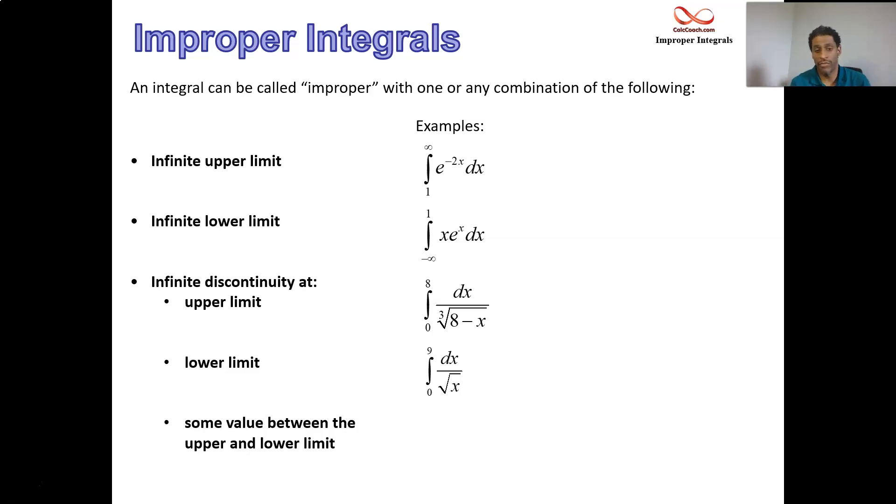Lower limit, well, if you have 1 over x or 1 over root x, and you're integrating with the lower limit of 0, for sure, 0 makes the denominator 0, so the lower limit is the issue, not the upper limit.